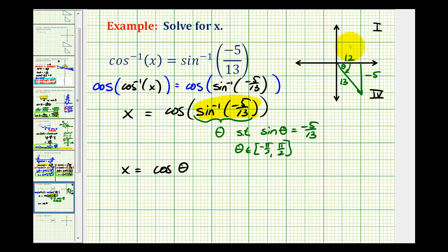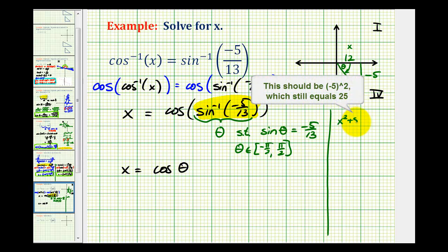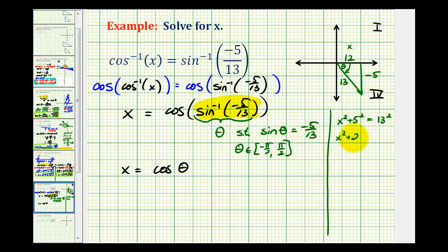If we didn't know that, we could label this x and use the Pythagorean theorem to determine that value. We would have x² + (-5)² = 13², or x² + 25 = 169.